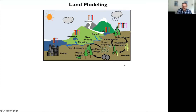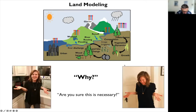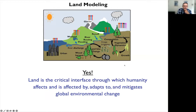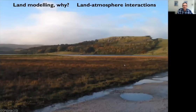I'd like to start with a question about land modeling. My wife is an oceanographer and we have conversations in the kitchen about our science — she'll ask whether it's really necessary to work on the land. My answer is yes, because land is a critical interface through which humanity affects and is affected by, adapts to, and mitigates global environmental change.